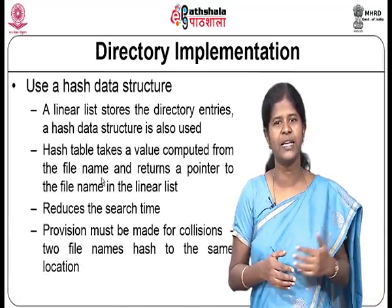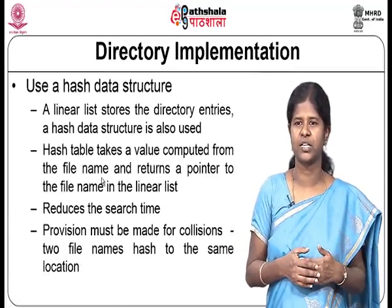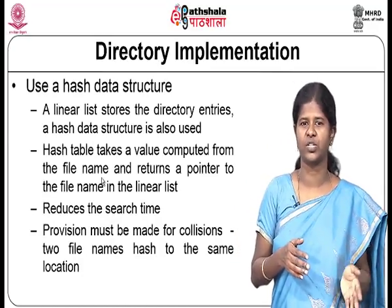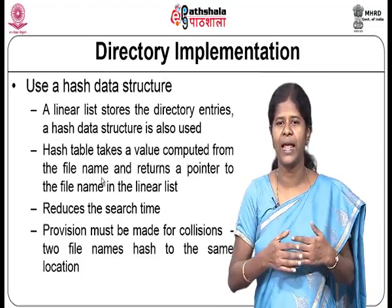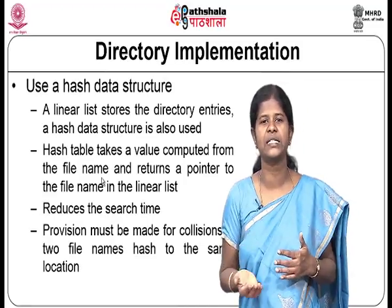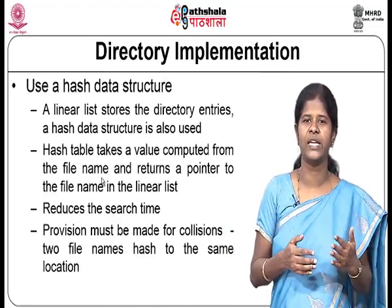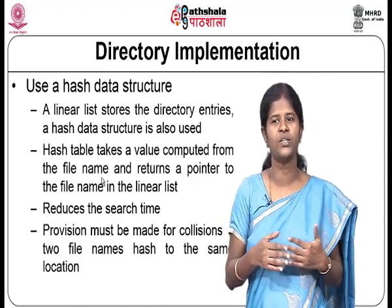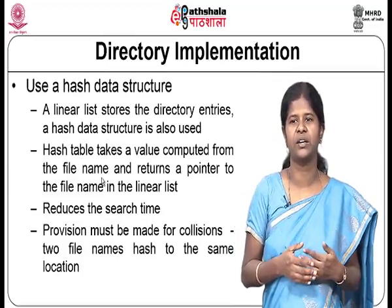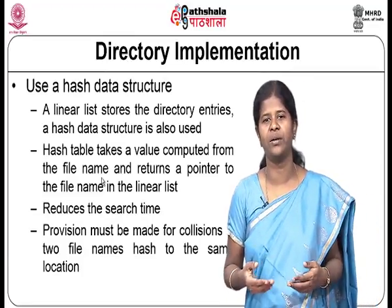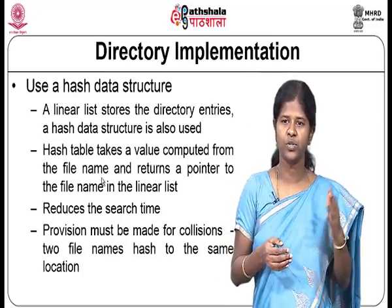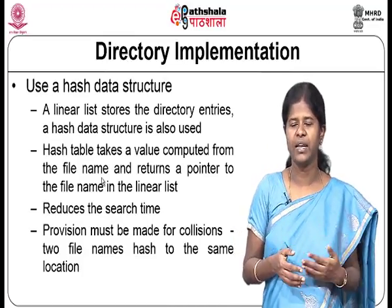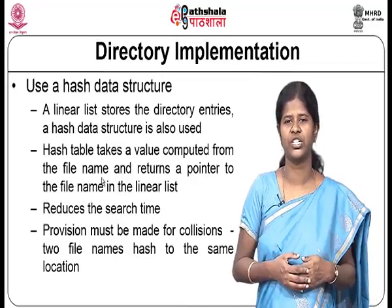Rather than a linear list alone, a hash data structure can be used. A linear list stores the directory entries, but a hash table takes a value computed from the file name and returns a pointer to the file name in the linear list, reducing search time. The drawback is that provisions must be made for collisions — when two file names hash to the same location. Either a linear list or a hash data structure can be used for implementing directories.